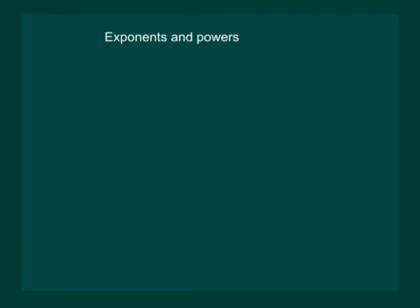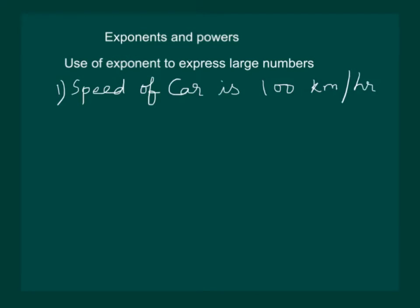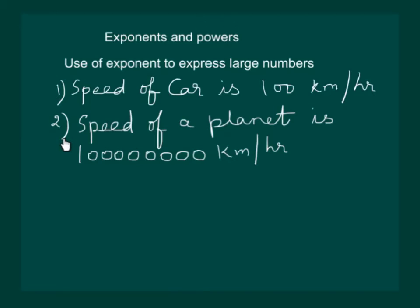Let us start by understanding how exponents and powers are useful in expressing large numbers. We can easily read our first sentence. Speed of car is 100 km per hour. But if we have to read the second sentence, we will read speed of a planet is 1,000,000,000 km per hour or we will take a while to convert it into 10 crores.